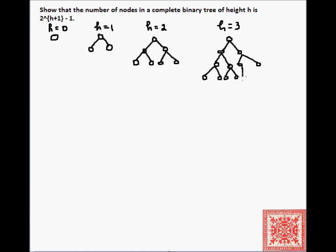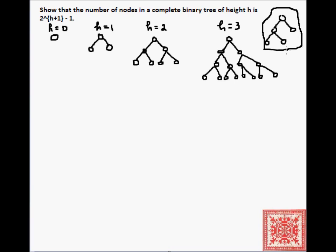Unlike in a full binary tree, where only the internal nodes must have both children present — internal nodes must have two children. Here's a full binary tree where every internal node has two children, but it is not a complete binary tree. So every complete binary tree is full, but not vice versa.